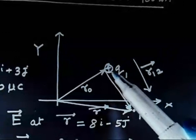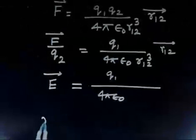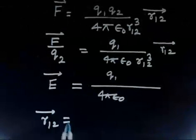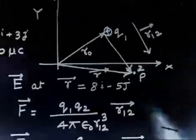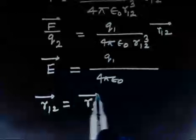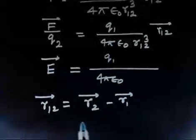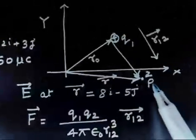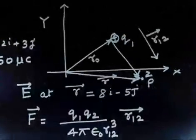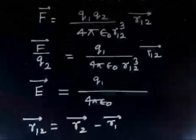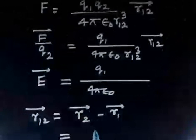So r12 is nothing but, in this case, position vector of 2 minus position vector of 1. So that is r2 minus r1. Now point P has a position vector 8i minus 5j. So if I write.